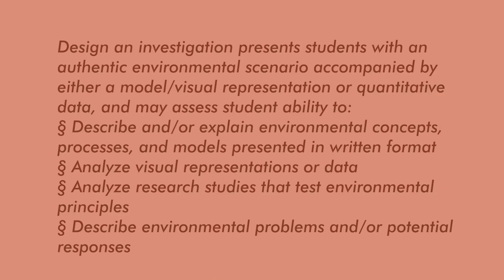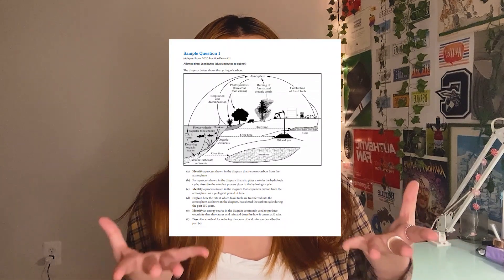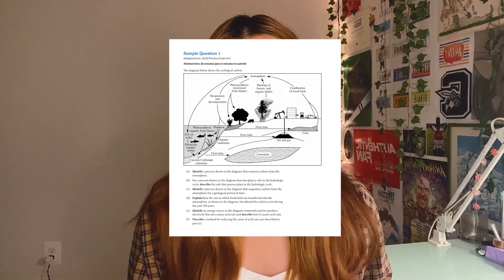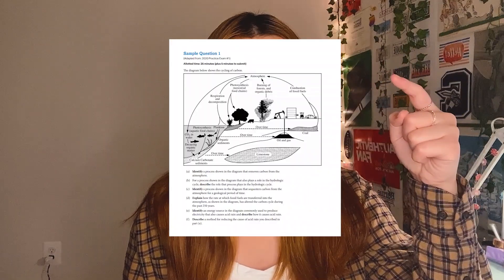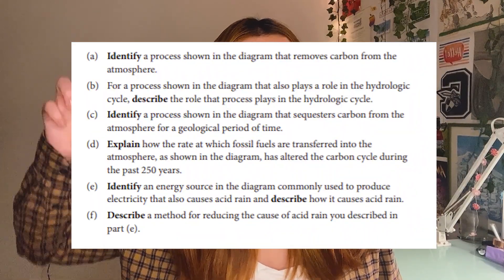This is an example of what this question may look like — it's pulled from College Board's first timed practice on their YouTube channel. It details the carbon cycle, but it can detail any other process, food web, or chart. You'll notice that each sub-question has a task verb in bold — some will say identify, some will say describe, justify, explain, etc. We'll be covering all of those task verbs in this video.